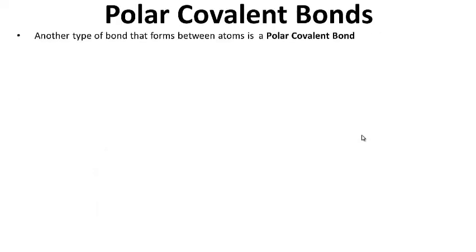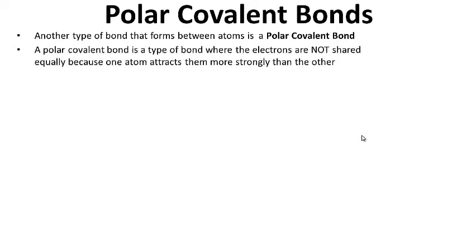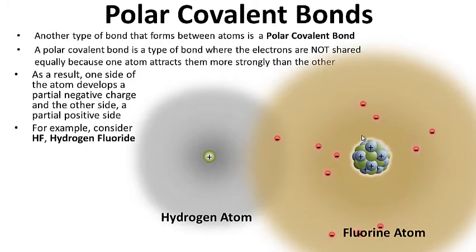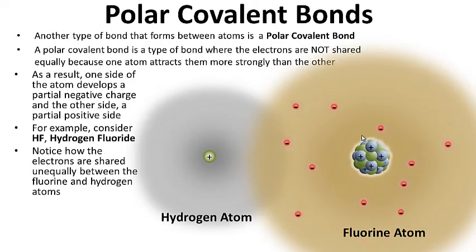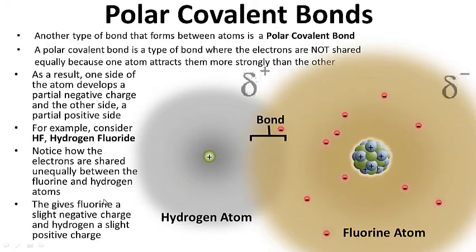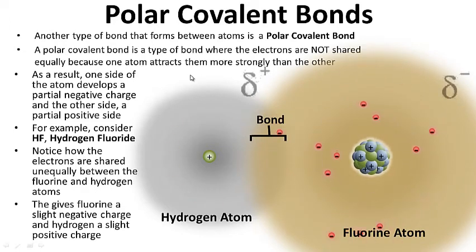Another type of bond that forms between atoms is a polar covalent bond. A polar covalent bond is a type of bond where the electrons are not shared equally, because one atom attracts them more strongly than the other. As a result, one side of the atom develops a partial negative charge and the other side a partial positive charge. Consider the molecule hydrogen fluoride — notice how the electrons are shared unequally between the fluorine and hydrogen atoms. The fluorine has a lot more electrons around it, giving fluorine a slight negative charge and hydrogen a slight positive charge. That's a polar covalent bond.